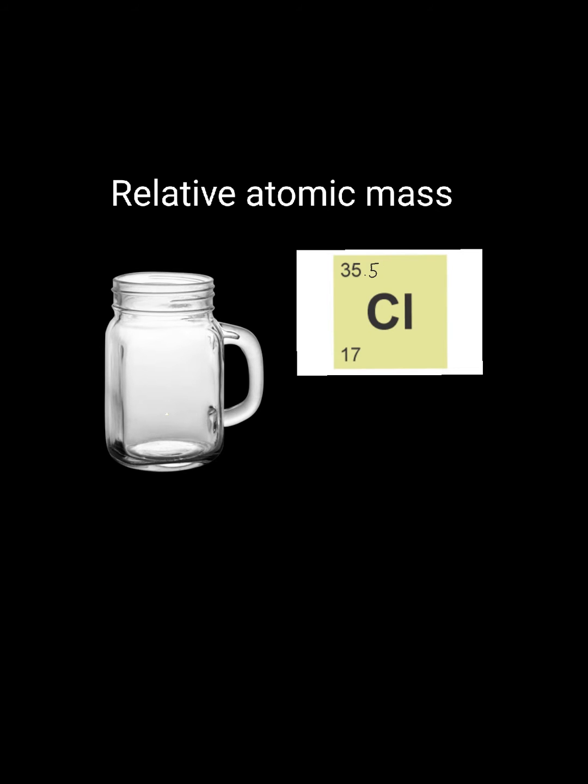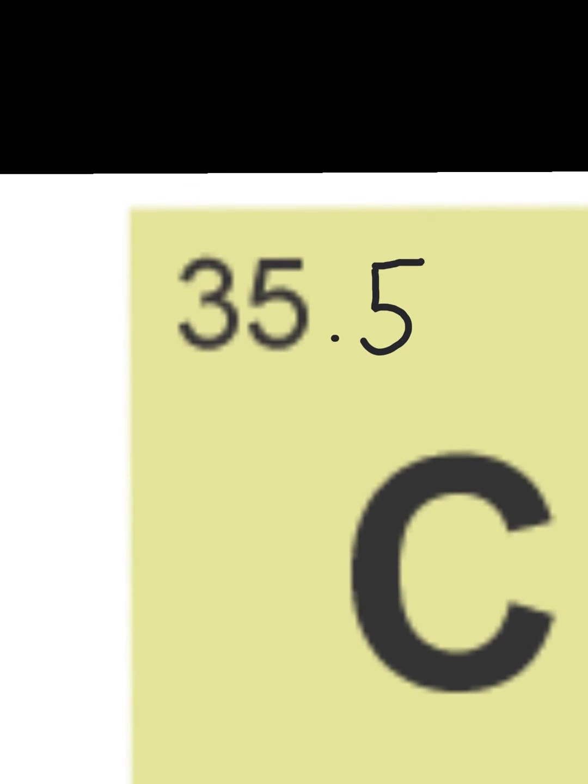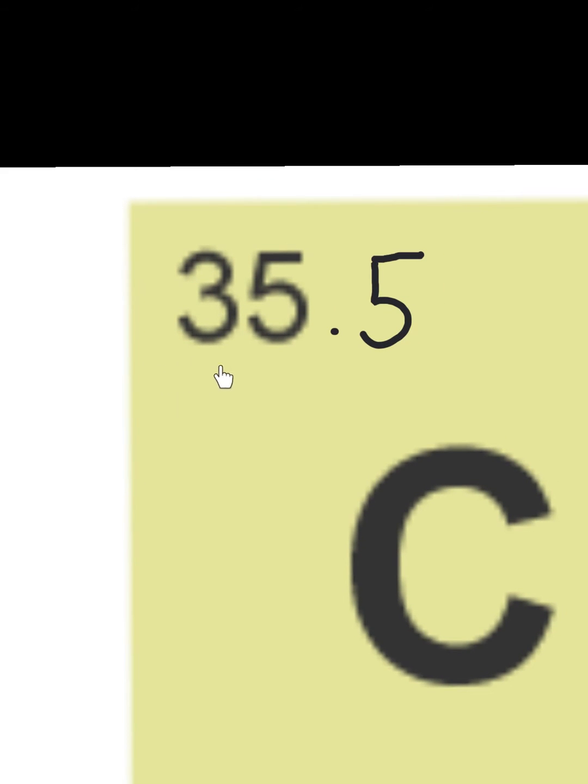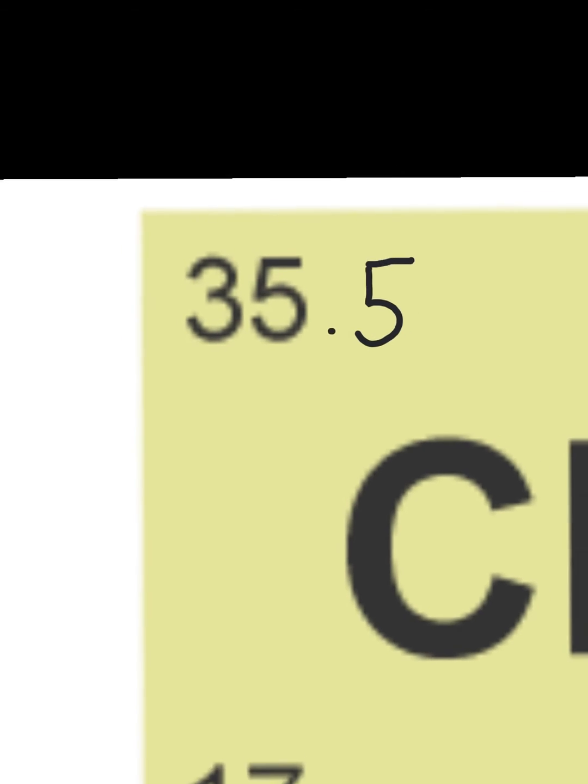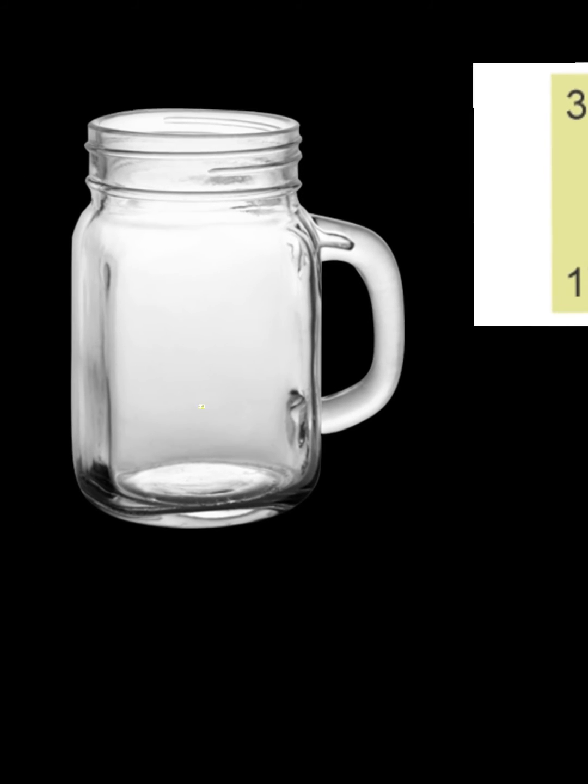Now I'm going to move on to calculating relative atomic mass. If you look at chlorine on a periodic table, you'll see it has a relative atomic mass of 35.5. You're probably wondering how they came to this number because you can't have half a neutron. So let's say we have a jar of chlorine atoms.